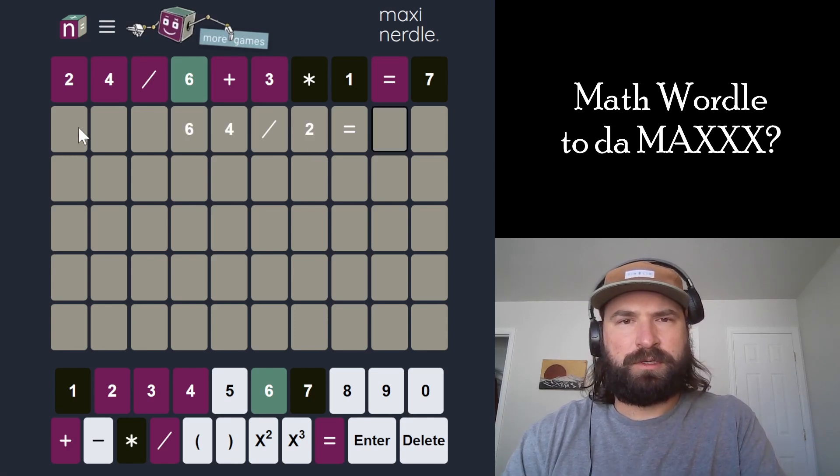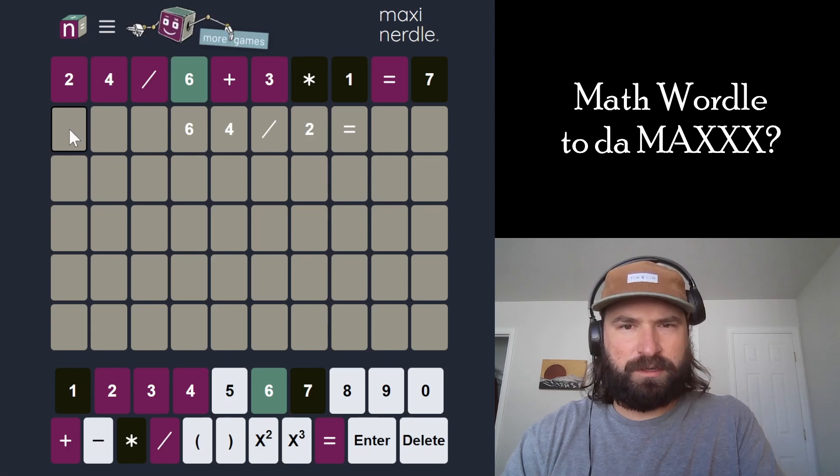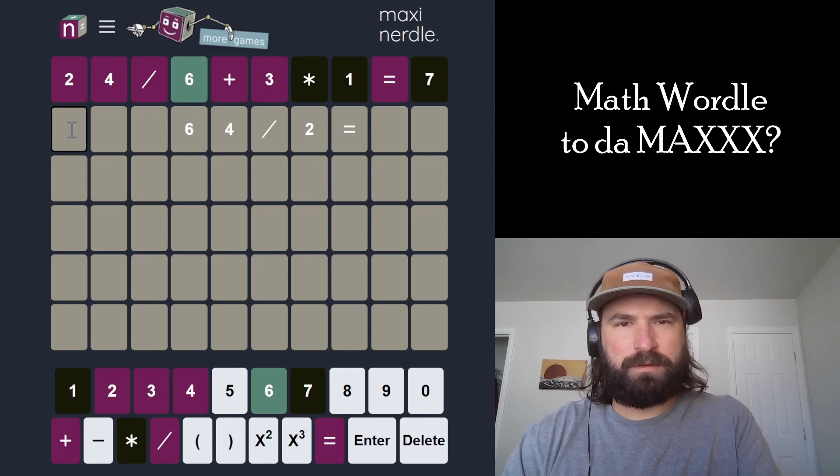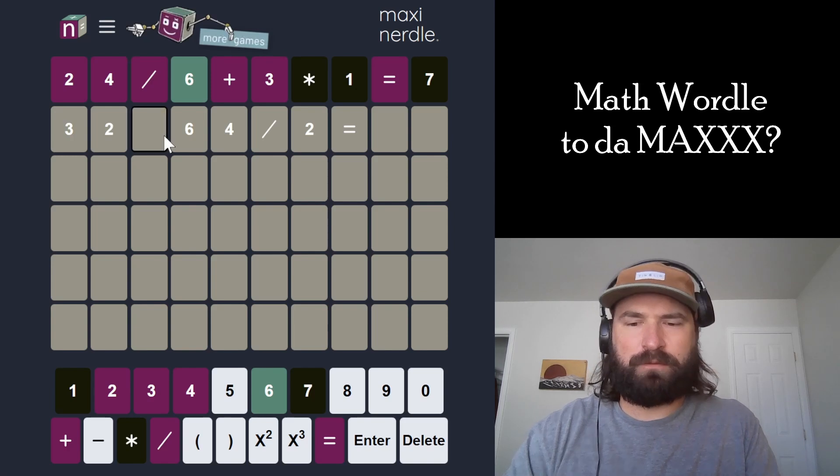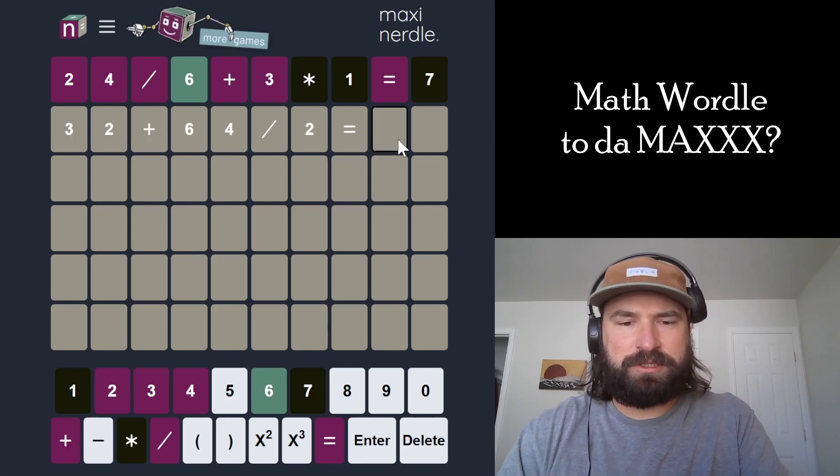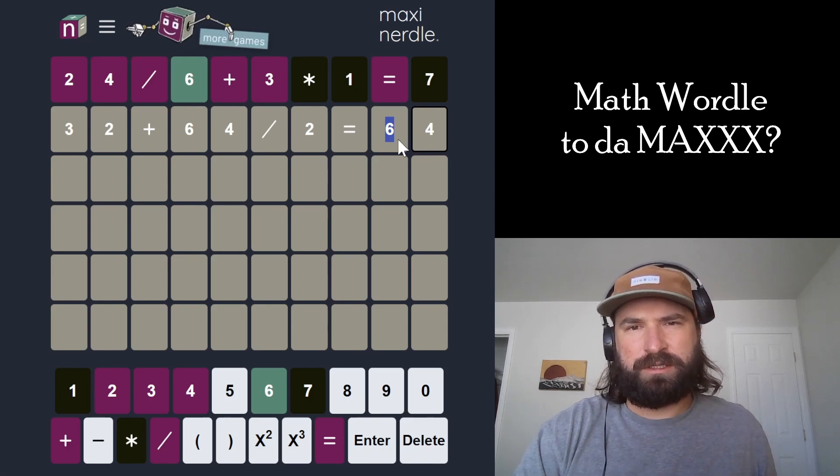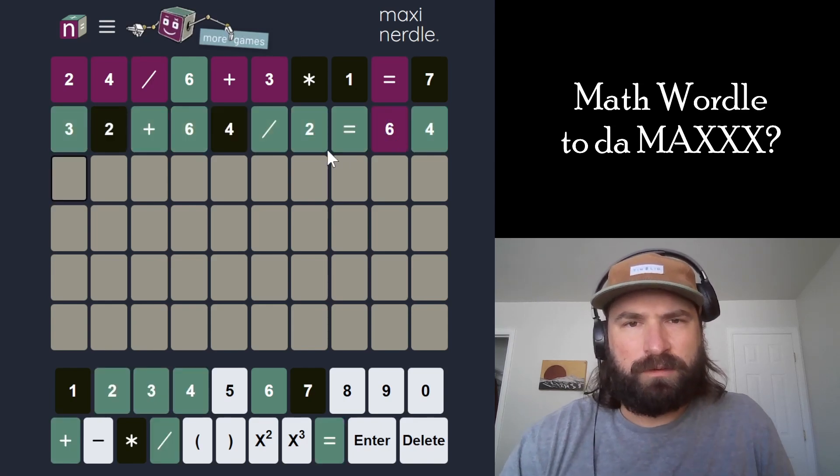64 divided by 2, and then I could do 30-something and have it equal something in the 60s. Yeah, so 32 plus 32 equals 64. This actually uses all the numbers again. This is like a pretty reasonable guess. This seems like a pretty good guess, honestly. Wow. Okay.